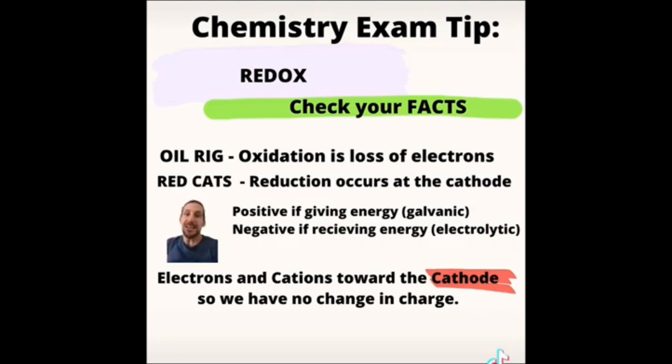The second thing is that reduction occurs at the cathode. So you always need to make sure that your reaction to the cathode is a reduction reaction, which is gaining electrons. Lastly, this is to do with the flow of electrons in a circuit. It always goes towards the cathode because that's where reduction occurs.